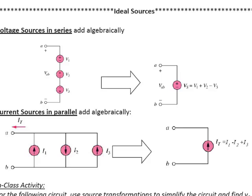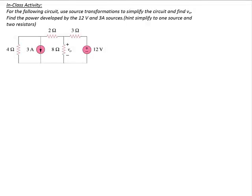Current sources in parallel also add algebraically. If you have current sources I1, I2, and I3, and I1 and I3 go into the top node and I2 comes out of the top node, then using KCL, I can write that as one current source equal to I1 minus I2 plus I3. Note that if the current sources are in parallel or the voltage sources are in series, this works. It does not matter whether there's another resistor in parallel with the current sources or another resistor in series with the voltage sources — you can combine them.